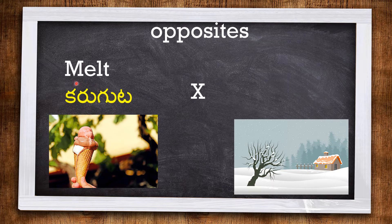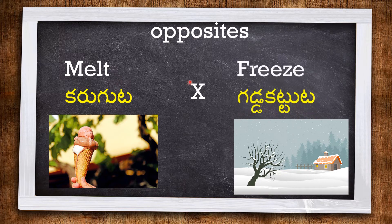The next word is MELT — here you can see the melting ice cream. The opposite of MELT is FREEZE. Here in this diagram you can see the frozen house and the frozen environment.